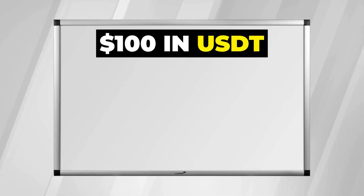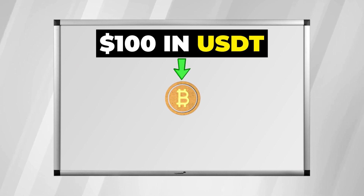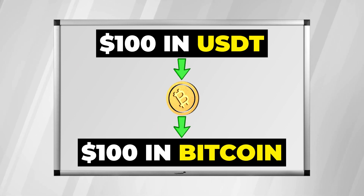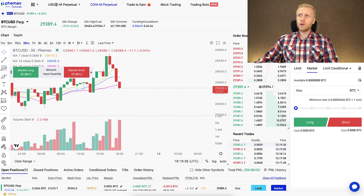For example, if you have $100 worth of USDT and you convert that into Bitcoin, then you have $100 worth of Bitcoin. However, contract trading is trading with leverage, so everything is amplified.